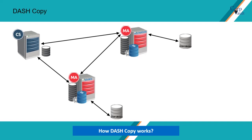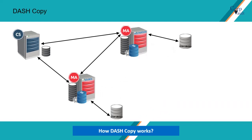Dash Copy operations are optimized auxiliary copy jobs that transfer only the changed data blocks to a secondary copy. The initial, or first aux copy job, will copy all the existing data from source to destination disk library — you may also call it seeding. Once the initial full aux copy job is performed, only the changed data blocks are transferred during subsequent aux copy jobs.